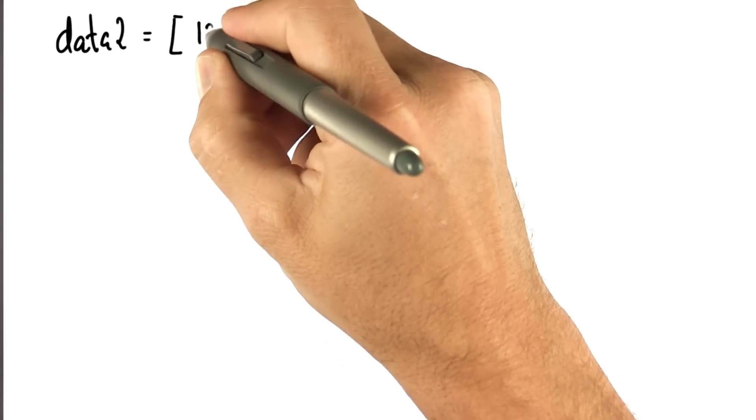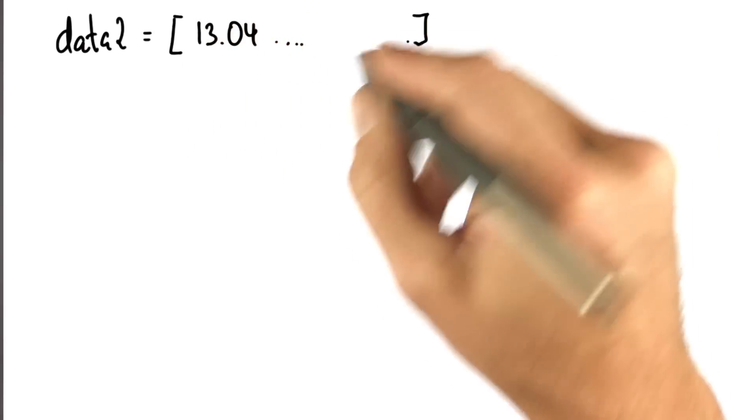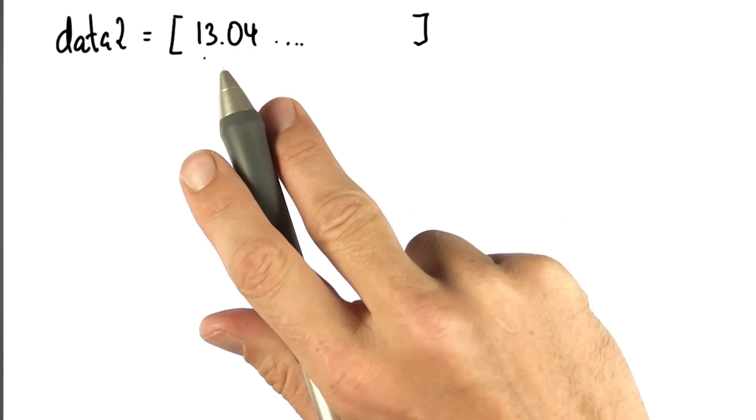So now things will become even more complicated. I'm going to give you a list of numbers, slightly different from the one before. Those are actually floating numbers. They have a decimal point.